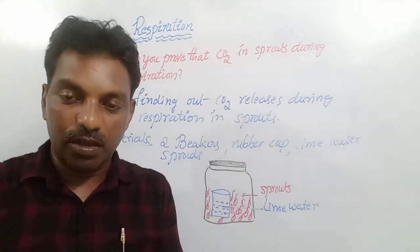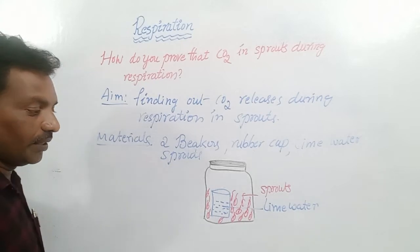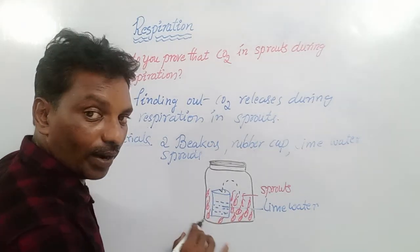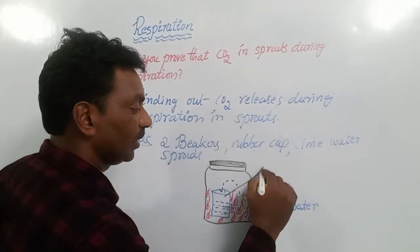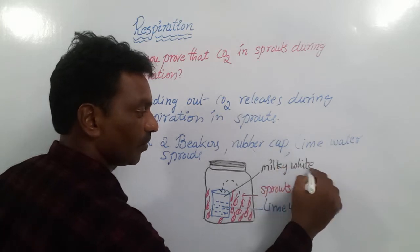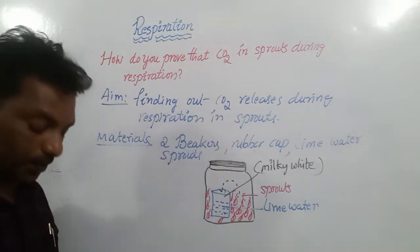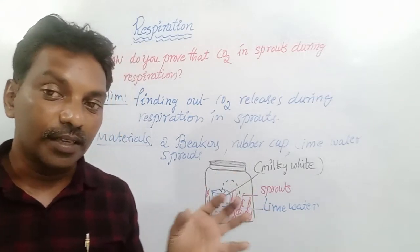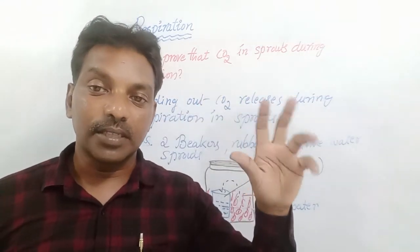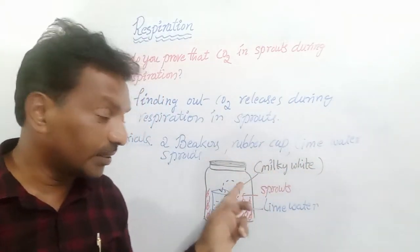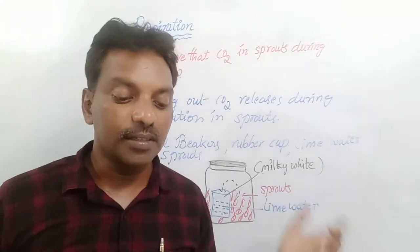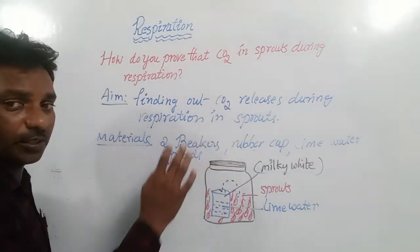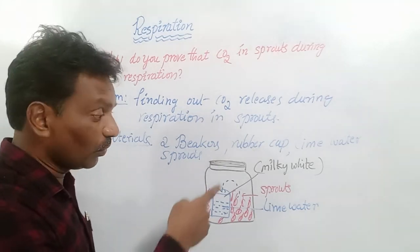If we keep the sprouted seeds in the beaker for some time, respiration occurs and they release a gas. That gas enters the lime water, and the lime water turns milky white. This proves that the gas released is carbon dioxide.